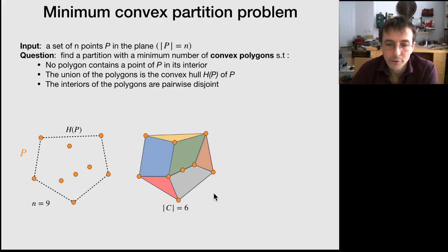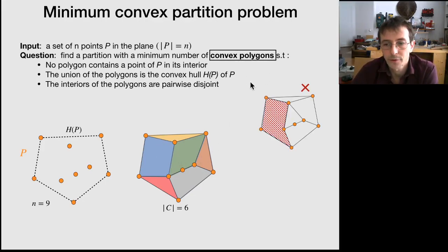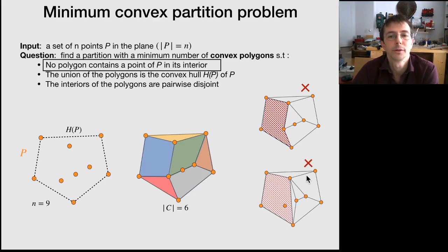So the first thing to notice is that each of these polygons is actually convex. So typically this would not be allowed. And the second thing is that no polygon contains a point of P in its interior. So typically this would not be allowed.